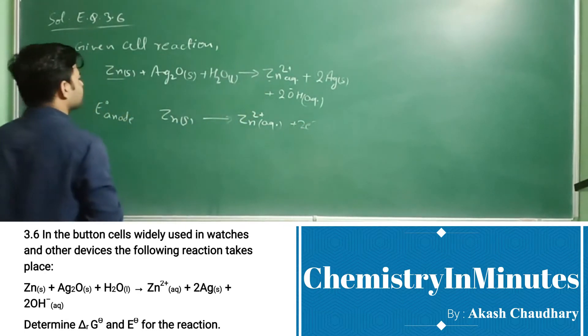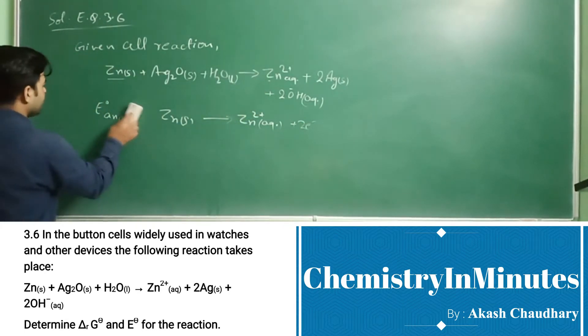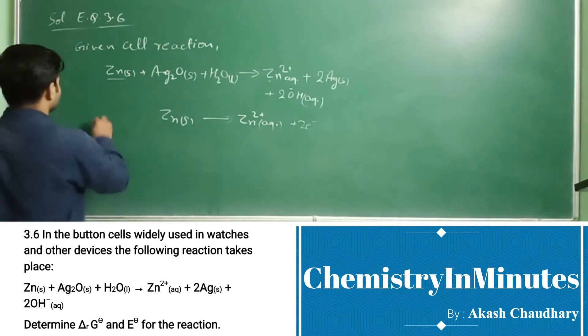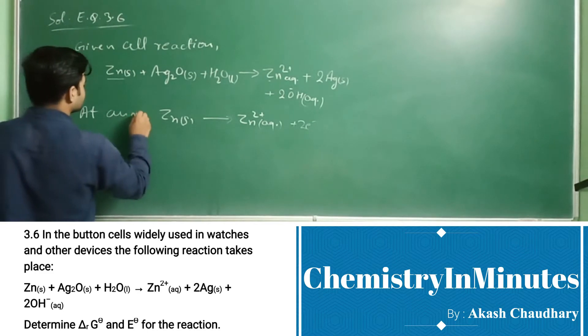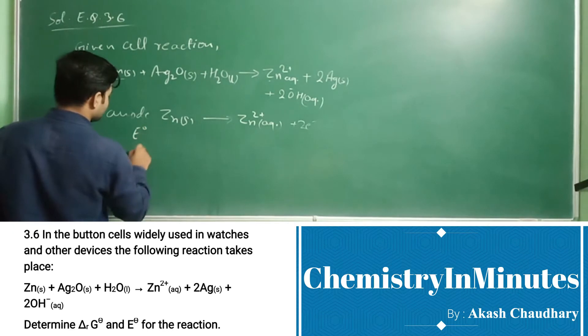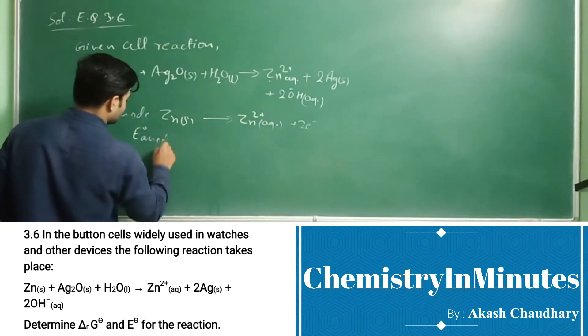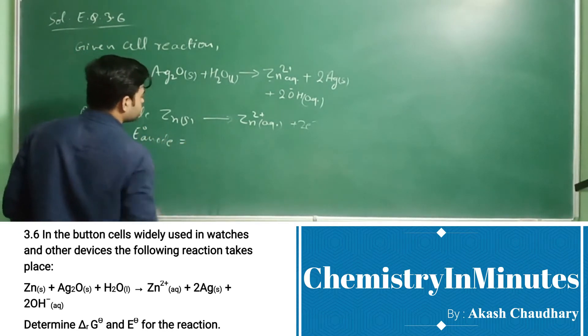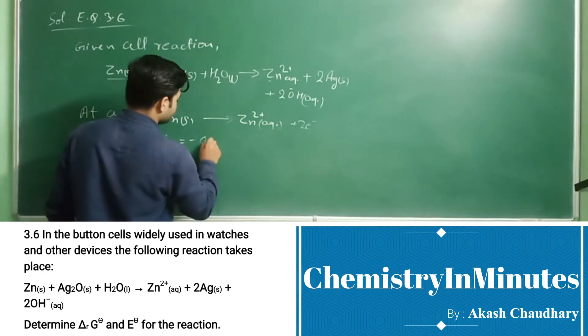This we can write at anode. From here, E0 anode equals minus 0.76 volt.